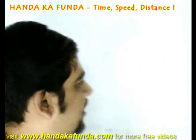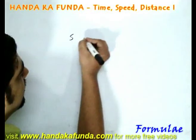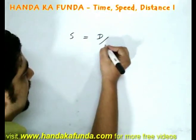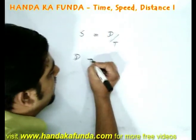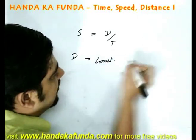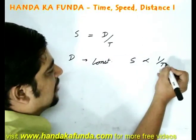The most basic equation in case of time, speed and distance is speed equals distance upon time. If the distance is a constant value, that would mean that speed is inversely proportional to time.